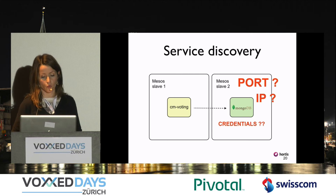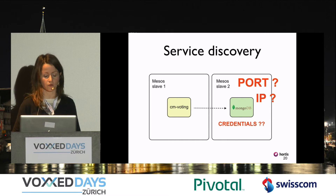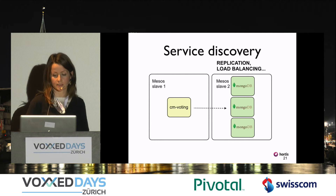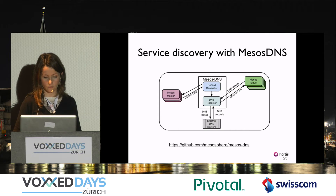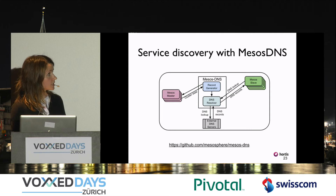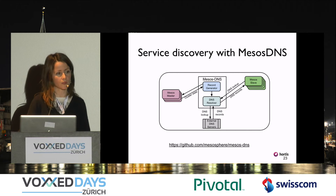Service discovery is needed to find the IP, port, and credentials to access MongoDB. In other cases, we could have several instances of the database, and because of replication we may need load balancing and failover management. For service discovery, I've used MesosDNS — a really simple tool for this purpose.